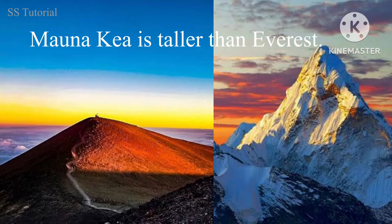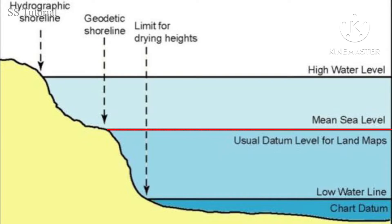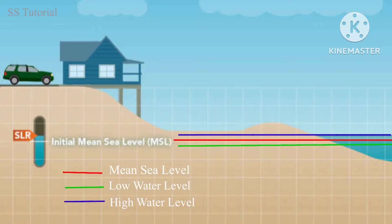So it is clearly seen that Mauna Kea is taller than Everest. But here is a twist. On our earth, the elevation of any place is generally measured from its datum, such as mean sea level. Datum is nothing but a reference point which is used to measure the location or elevation of any place on the earth's surface.